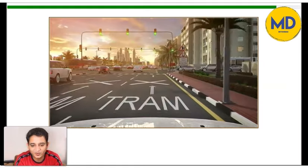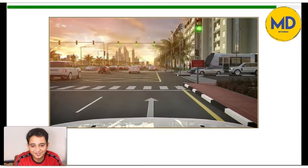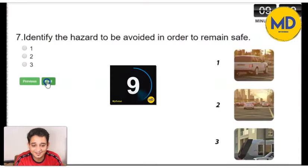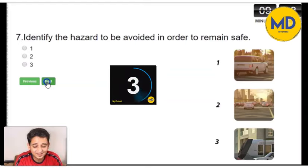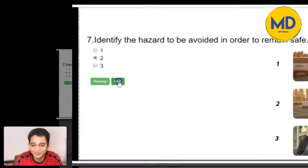In this video, you can see the tram is coming and at the junction there is already a car. Even if it's a green signal, you should not go because that's a hazard. The right option here is option 2, because the car is in the cross junction where it should not be. Even when the signal is green, you should not cross.